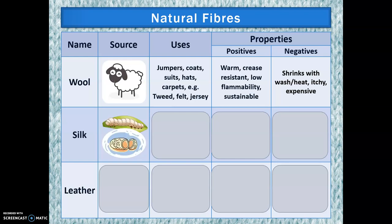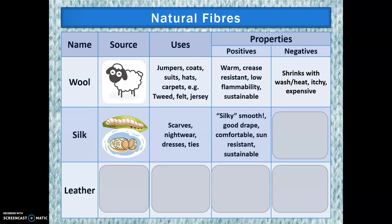Silk comes from the silkworm — specifically from the cocoons they make before their moth stage. It's used for scarves, nightwear, dresses and ties. Properties include being very smooth — that's where we get the term — it has good drape, meaning the way it hangs off your body, it's comfortable, sun resistant and sustainable. However, it creases easily, it's expensive, doesn't wash especially well, and there are ethical concerns because the insects may be killed in the process. So if you're vegan, you may choose not to wear silk.